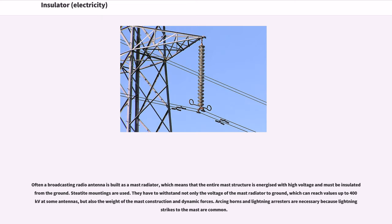Often a broadcasting radio antenna is built as a mast radiator, which means that the entire mast structure is energized with high voltage and must be insulated from the ground. They have to withstand not only the voltage of the mast radiator to ground, which can reach values up to 400 kilovolts at some antennas, but also the weight of the mast construction and dynamic forces. Arcing horns and lightning arrestors are necessary because lightning strikes to the mast are common.